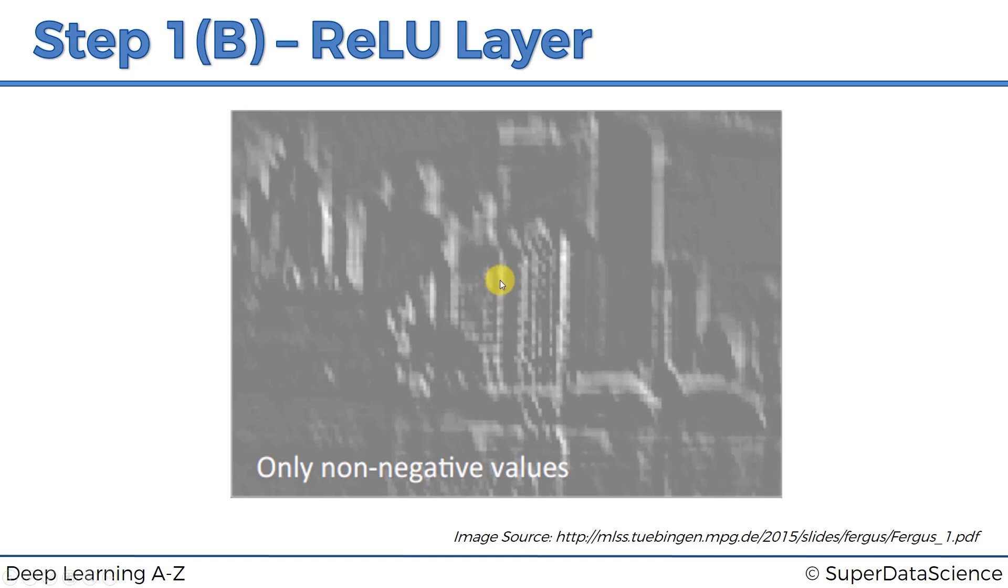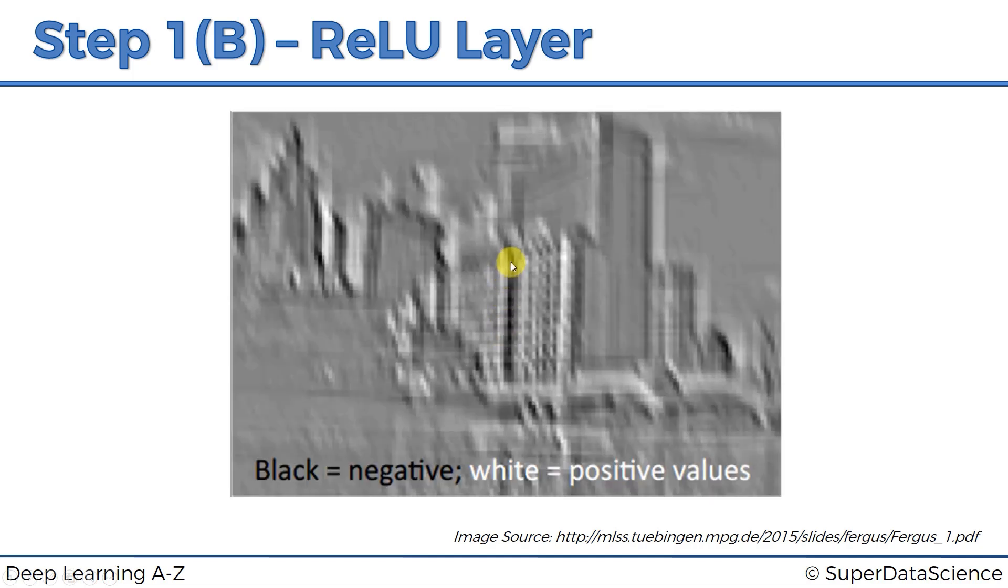So think of it in terms of linearity. So it looks like when you go from white to gray, the next step would be black. It's a linear progression from bright to dark. And therefore, this is kind of like a linear situation. When you take out the black, you break up the linearity.